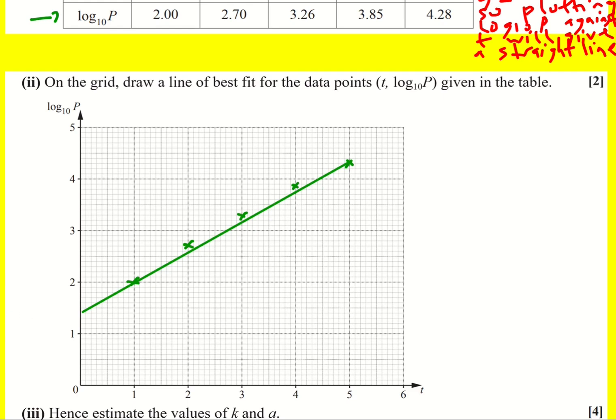So what we see is that the y-intercept is going to be I've got 1.4, and then I'm going to work out the gradient using the whole triangle to be as accurate as I can. I'm going along 5 and then I'm going up to 4.3, so 4.3 minus 1.4 is just going to give 2.9. So m is going to be 2.9 divided by 5 which is 5.8 over 10 which is 0.58.